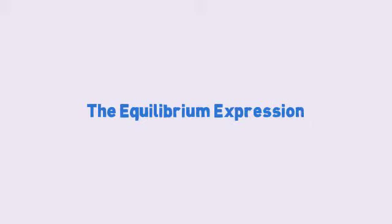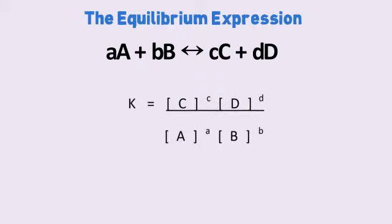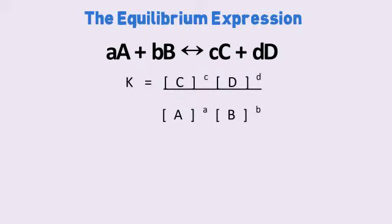Let's look at the equilibrium expression, the mathematical expression for equilibrium. If we have a balanced equation, aA plus bB yields at equilibrium, cC plus dD, double arrow, meaning this is an equilibrium, does not go 100%. The equilibrium constant is expressed as follows.